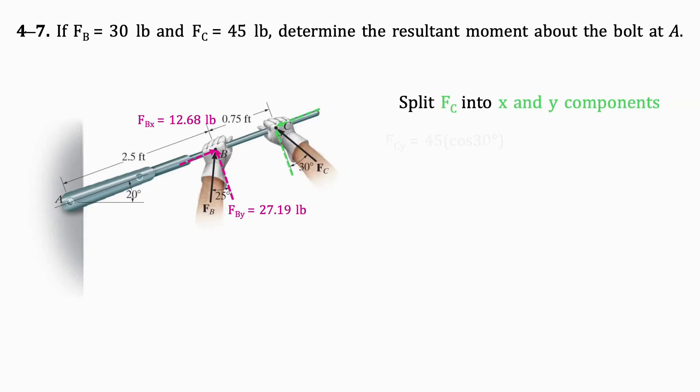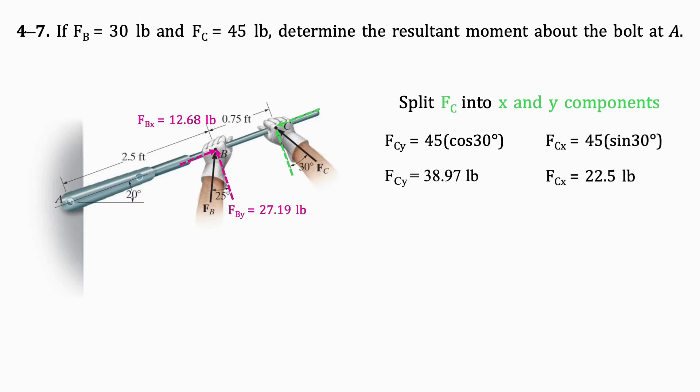Then, we split FC into X and Y components using the given angle. By doing this, we get FCY equals 38.97 pounds and FCX equals 22.5 pounds.